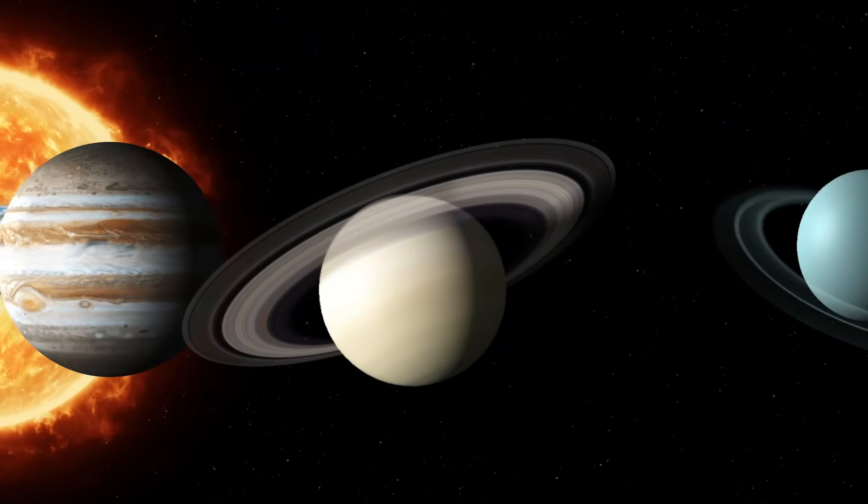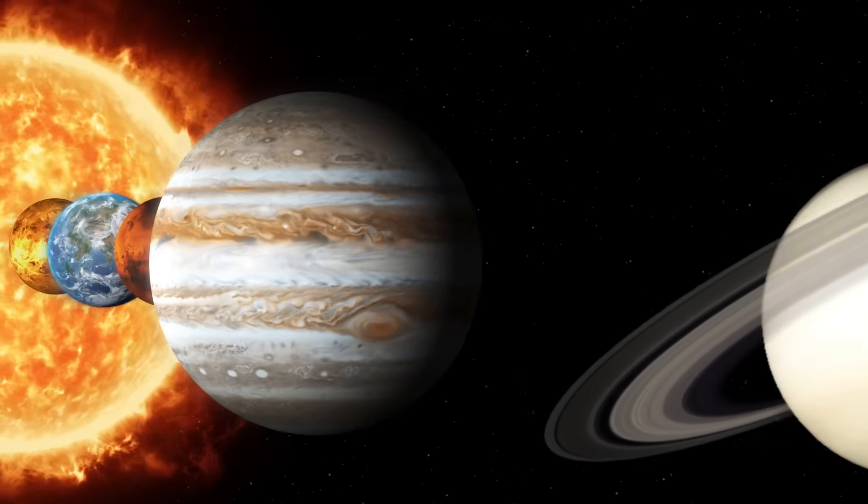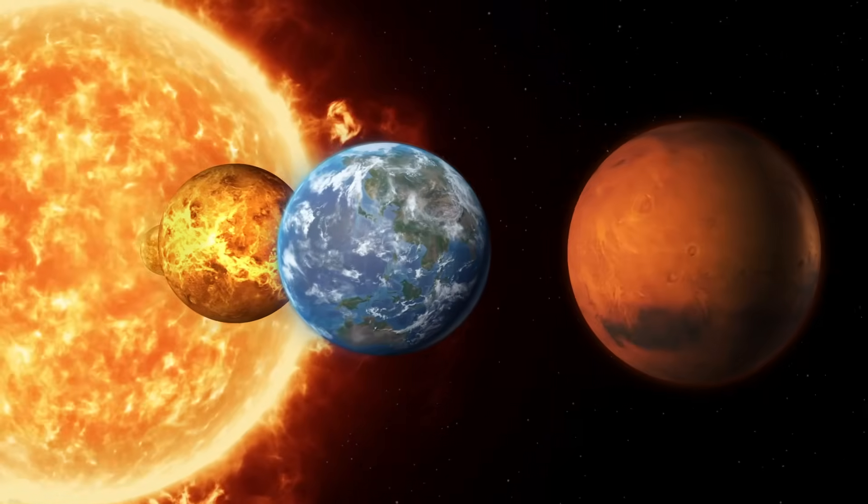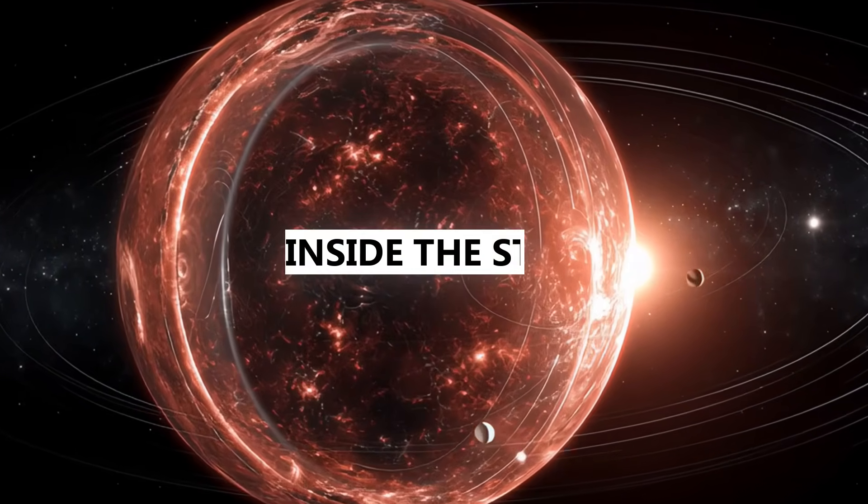Mercury, Venus, Earth, Mars, Jupiter, and most of Saturn's orbit would all be inside this thing. You'd literally be living inside a star.